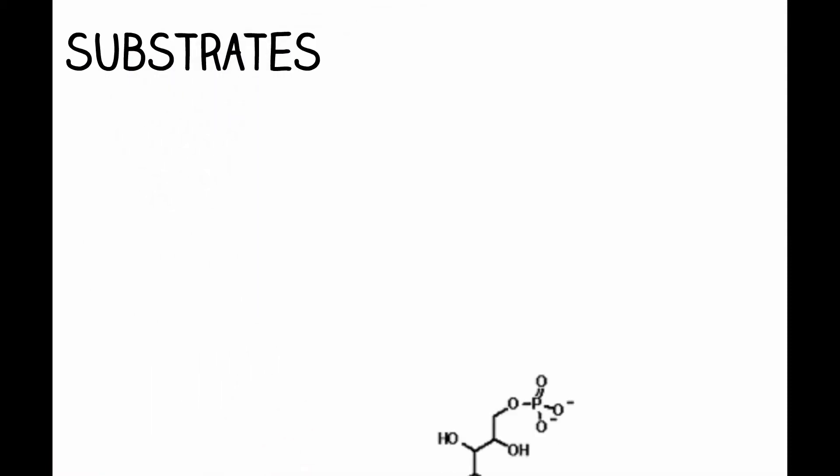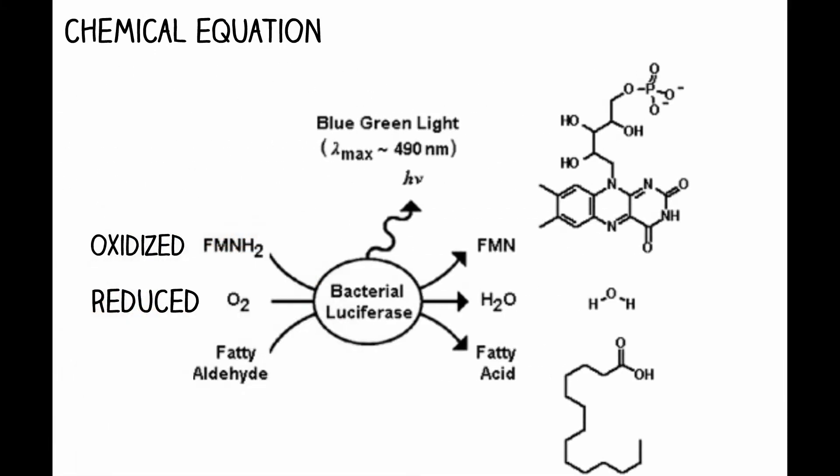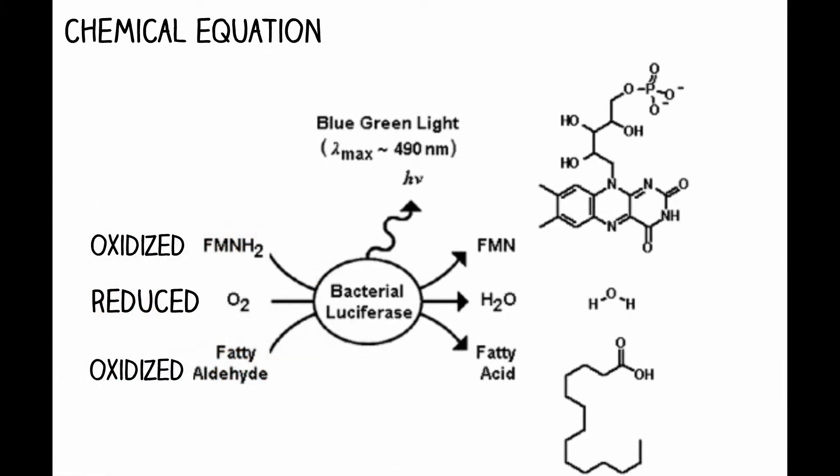Upon synthesis, luciferase will have three substrates: a reduced flavin mononucleotide, oxygen, and a long fatty aldehyde chain. While oxygen is reduced, the other two are oxidized. The excess energy from the oxidoreduction is released as a blue-green light emission.